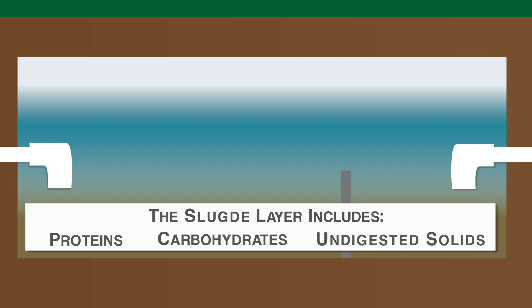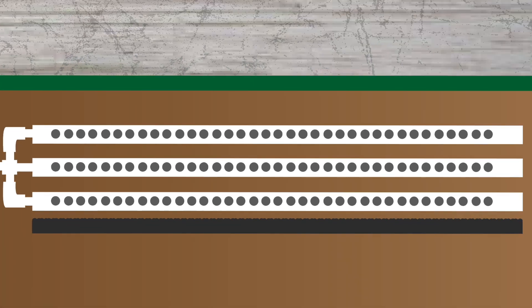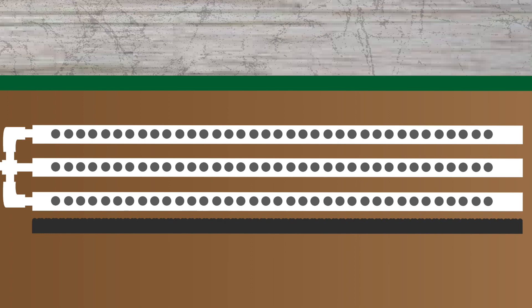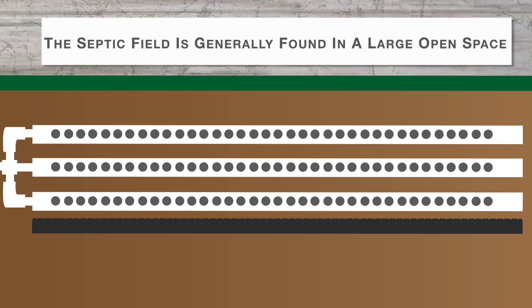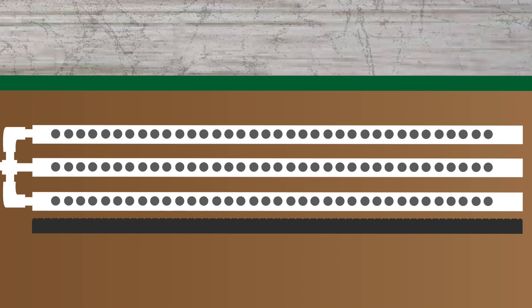The sludge layer generally sinks to the bottom of the tank and is made up of proteins, carbohydrates, and undigested solids. After the scum and sludge have been separated, the water then flows out of the tank and into the septic field, where the lateral lines are located. This field is generally a large space, typically in your backyard or other large open space, where several lateral lines extend from the septic tank.